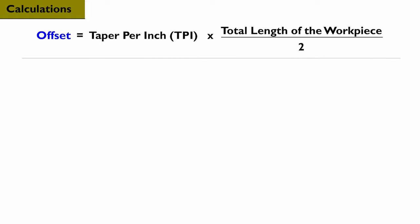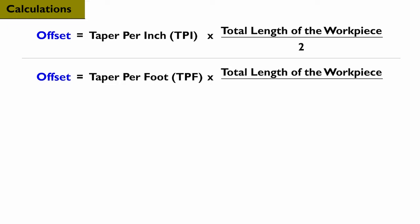If you know the taper per foot measurement, TPF, you can calculate the offset by multiplying the TPF by the total length of the workpiece and then dividing by 24.